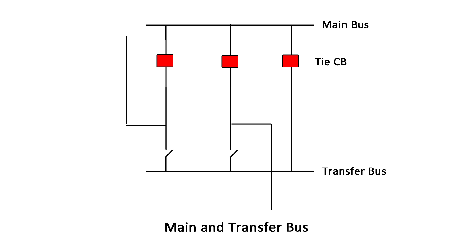The transfer bus is energized and the isolator nearest the transfer bus of the breaker to be maintained is closed. The circuit breaker to be maintained is now opened, isolated, and removed for maintenance. The circuit under maintenance is transferred to the transfer bus.